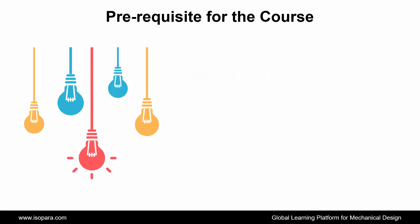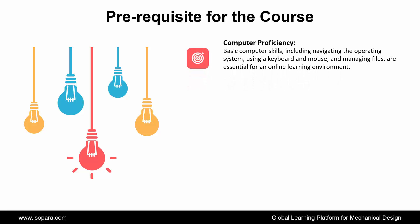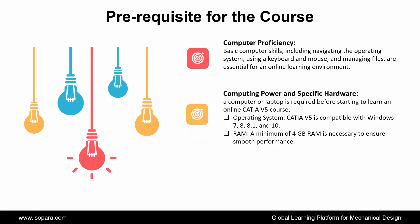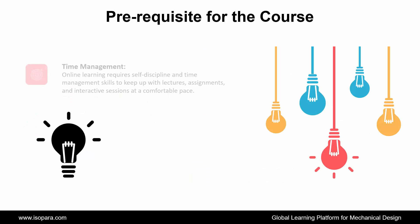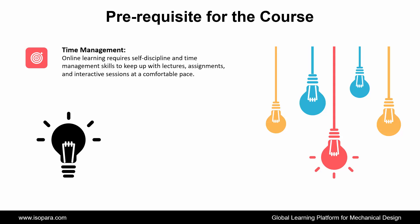If you don't have access, contact our technical team. Fourth, computer proficiency: basic computer skills including navigating the operating system, using a keyboard and mouse, and managing files are essential for an online learning environment. Fifth, computing power and specific hardware: a computer or laptop is required before starting. The operating system should be compatible with Windows 7, 8, 8.1, or 10, and a minimum of 4 GB RAM is necessary for smooth performance. Additionally, a fundamental understanding of engineering concepts and technical drawings can aid in comprehending CATIA design principles. And last, time management: online learning requires self-discipline and time management skills to keep up with lectures, assignments, and interactive sessions at a comfortable pace.